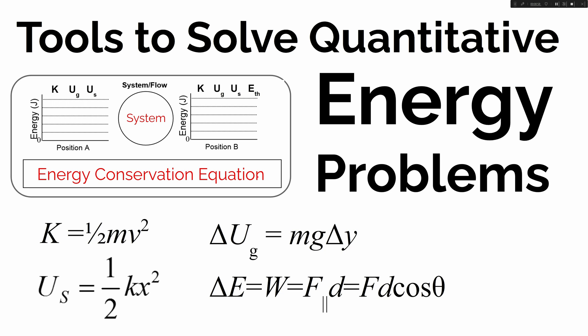In this video I'd like to show you how to solve some basic quantitative and symbolic energy problems using the tools we've developed through lab experiences and conversation and class so far. The tools we have at our disposal are a qualitative tool called an energy bar graph, the energy conservation equation, and equations to calculate energy stored in the kinetic energy account, gravitational potential energy account, spring potential energy account, and the amount of energy transferred into or out of a system — which is defined as work.